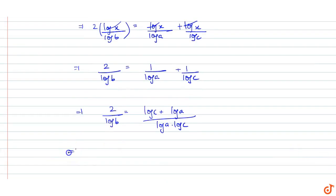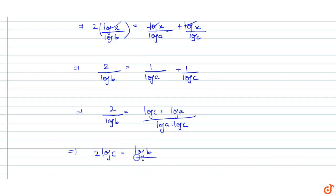Then we can see that 2 log C is equal to log B upon log A, into log C plus log A.